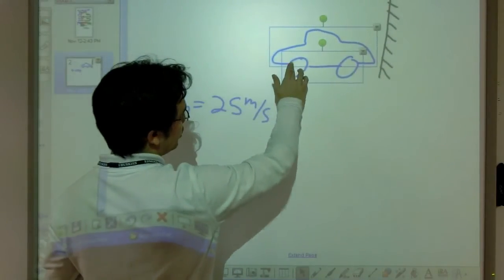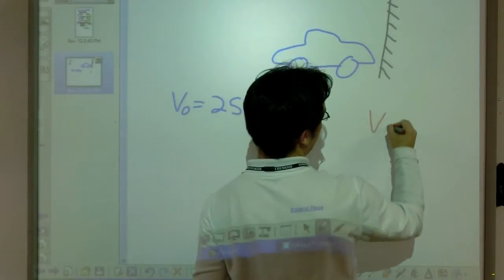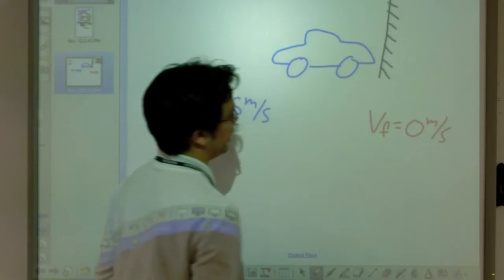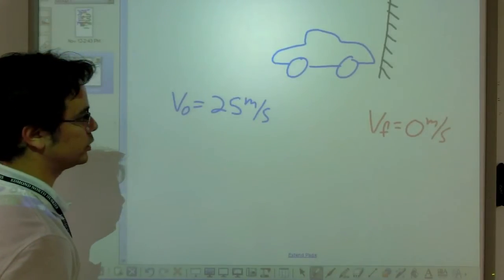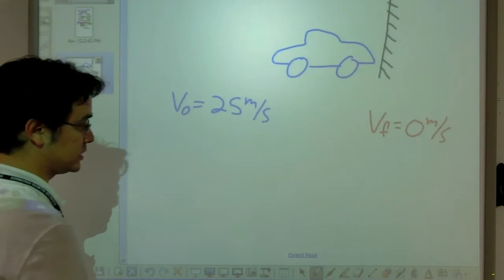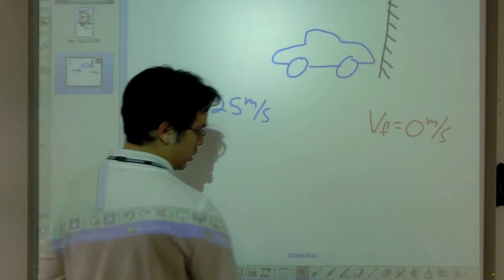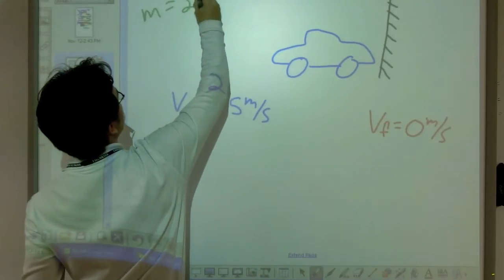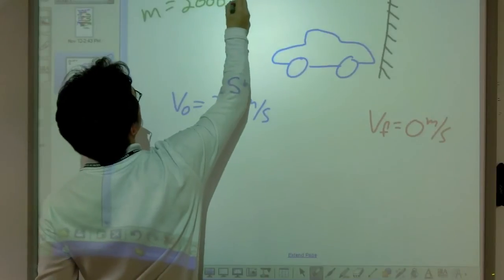And after the collision, we get a situation where the final velocity Vf is going to be equal to 0 meters per second. That's usually what happens when you run into a wall. You come to a dead stop. With any luck, not an emphasis on dead. So I will also tell you that the mass of our car is equal to 2,000 kilograms.